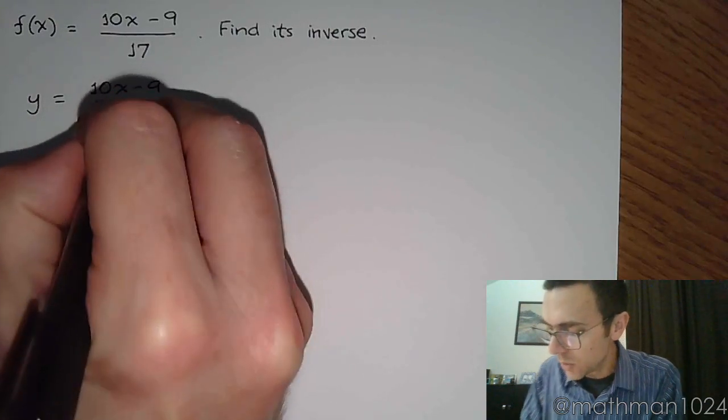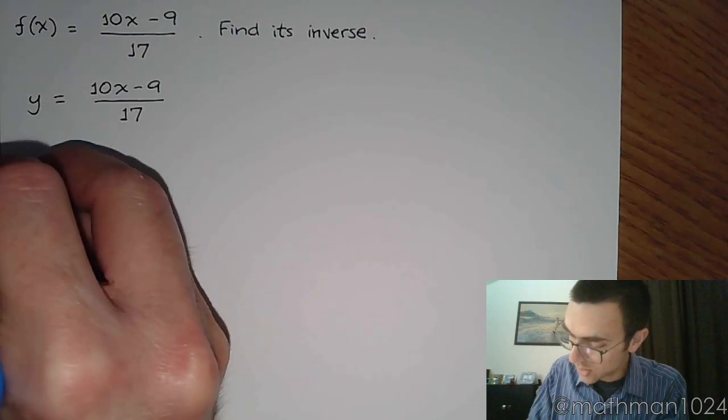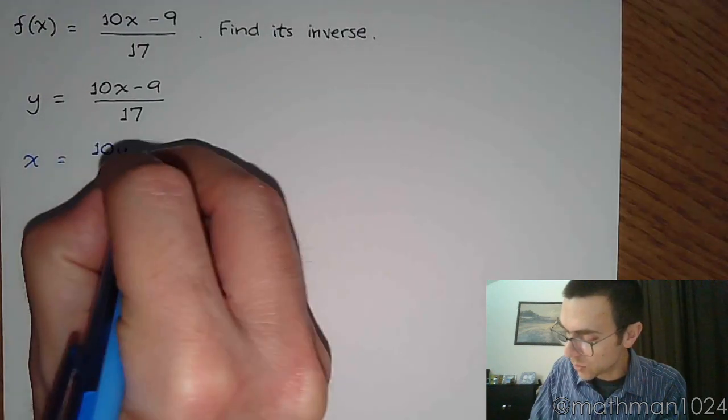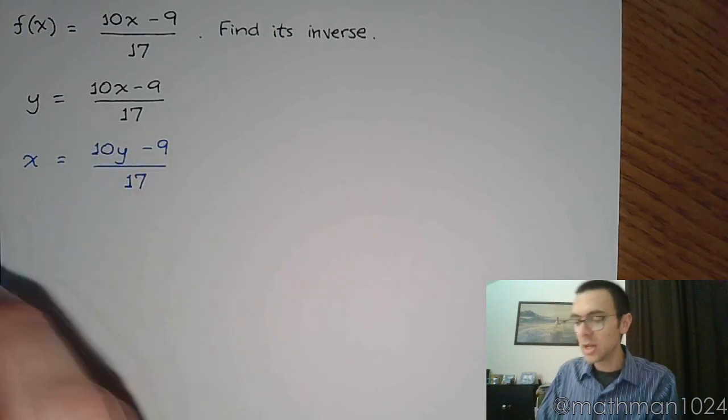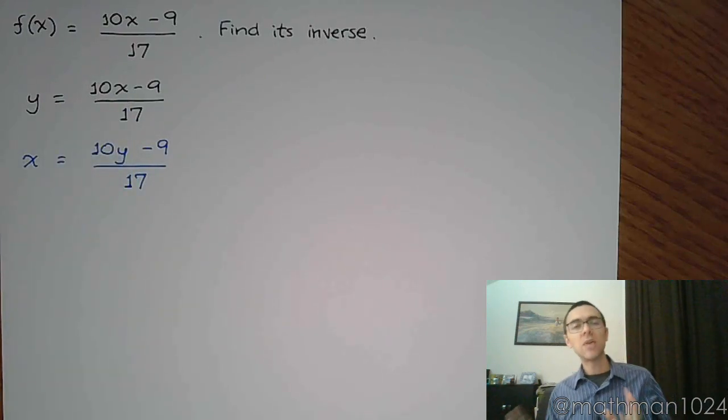And once we get here, we start talking about the inverse and how x becomes y and y becomes x. So we now rewrite this to say x equals 10 times y minus 9 over 17. It's just y becomes x, x becomes y. No big deal. And then from here we solve this equation for y.